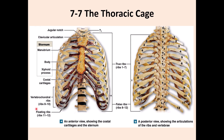And finally, these are the floating ribs — ribs 11 and 12. You can see these from the posterior view. They do not have any cartilage; they stay in the back. They protect the kidney and the liver, but they do not come anteriorly.